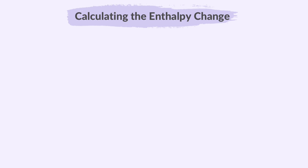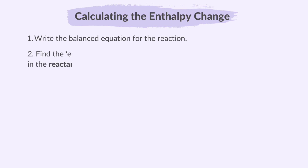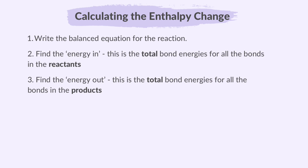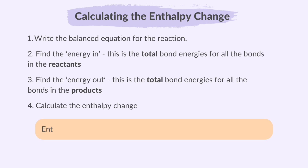Let's learn how to calculate the enthalpy change of a reaction using bond energies. First, we write the balanced equation for the reaction. Then, find the energy in — this is the total bond energies for all the bonds in the reactants. Now, find the energy out — this is the total bond energies for all the bonds in the products. Finally, calculate the enthalpy change. Enthalpy change is equal to energy taken in, take away, energy given out.